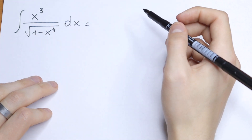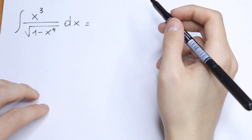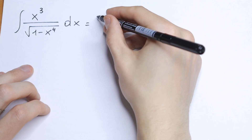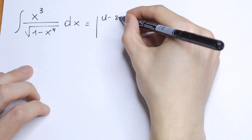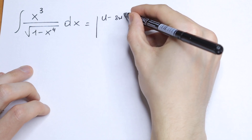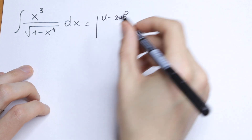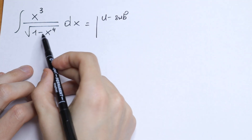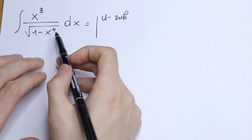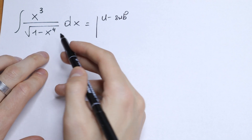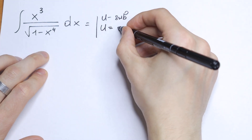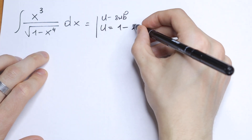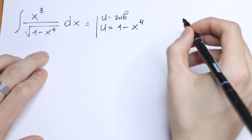So how can you solve this? I want to suggest using a u-substitution right here. Let u equal 1 minus x to the fourth power.